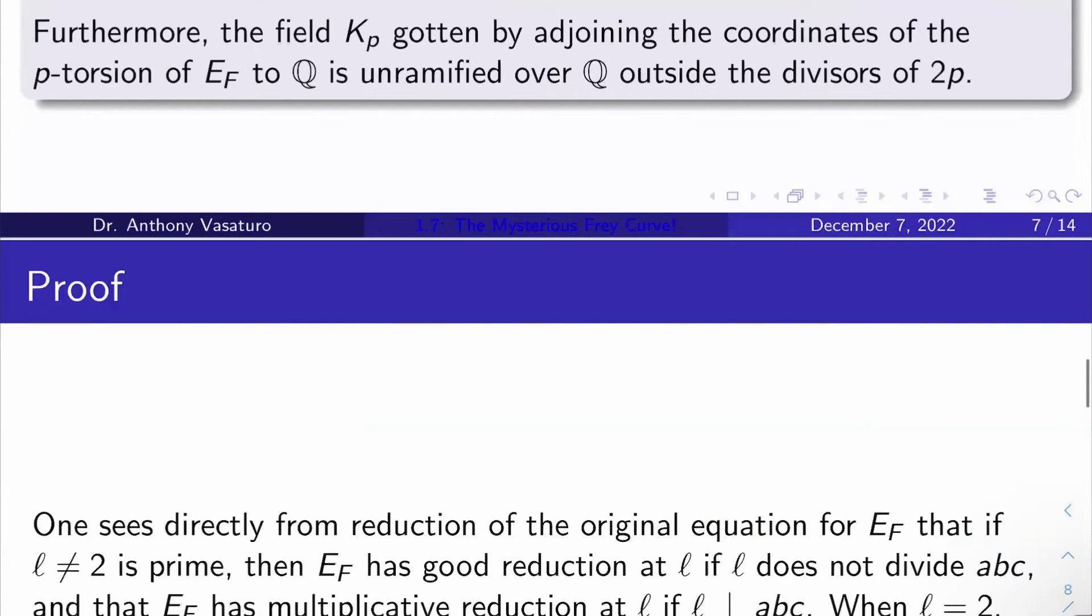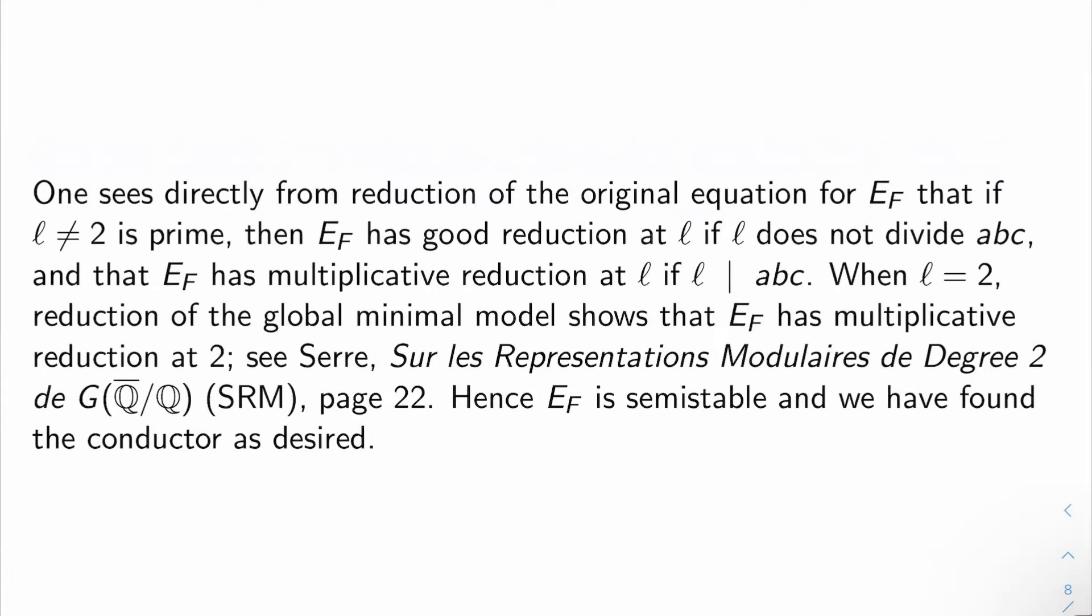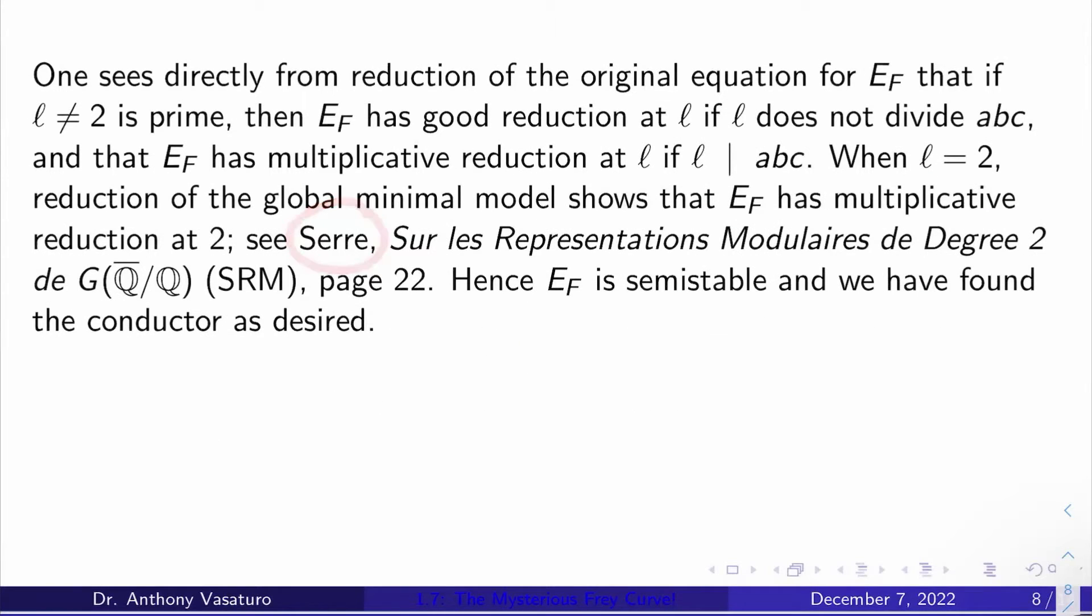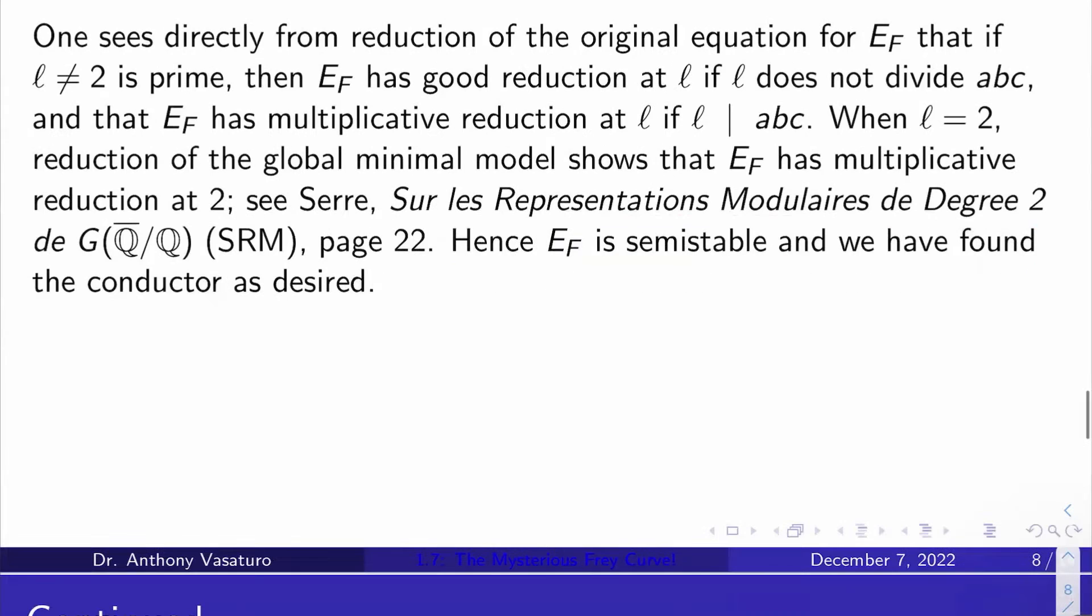So proof, I'll prove this in pretty good detail actually. You can check from reduction of the original model for E_F, that if l is a prime that isn't 2, then E_F has good reduction at l if l doesn't divide abc, and that E_F has multiplicative reduction at l if l does divide abc. So this is just calculations. If l is 2, just reduce the global minimal model of E_F to find that there's multiplicative reduction at 2. Serre gives a little bit of these arguments in his Serre conjectures paper, which I'll call SRM from here on out. Well that's by definition then E_F is semi-stable, and I found the conductor, and I already found the minimal discriminant before, so I'm done with the first part of the proposition. So how about this whole p-torsion business?